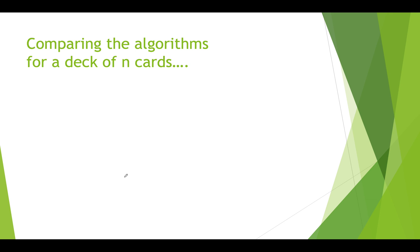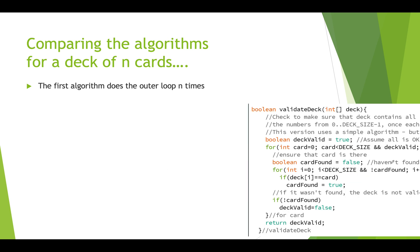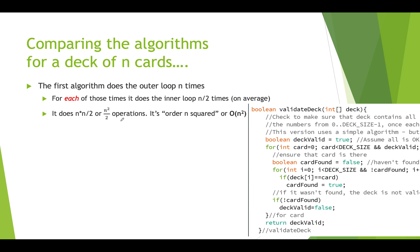So let's talk about why that's faster. The first algorithm does an outer loop n times — however many cards are in your deck — and for each of those, it does an inner loop. That inner loop probably won't go n times because we stop when we find the card, and on average we get about halfway through the deck. So the inner loop goes about n/2 times. That means it's n times n/2, which is n²/2 operations. In computer science, we call this order n squared.